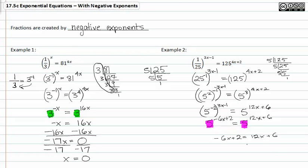Now I'll just solve for x. I'll do this by subtracting 12x from both sides and subtracting 2 from both sides. This gives me negative 18x is equal to 4.